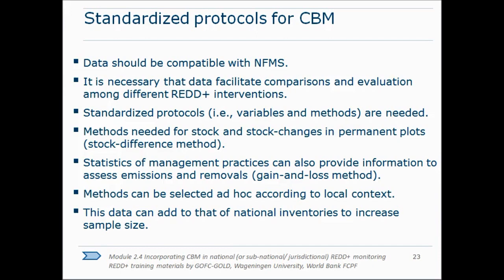The first method is the stock change method — forest inventory. You set up plots, measure them, come back later, measure again, and compare to see whether there's been an increase or decrease in biomass. The other method is the gain-loss method, which is entirely statistical and doesn't depend on fieldwork. It uses secondary data — for example, timber management plans — to calculate how much biomass has been lost through timber extraction or firewood, balanced against natural growth rates.